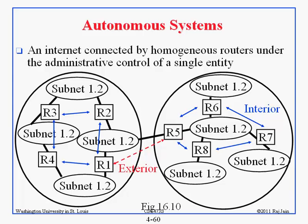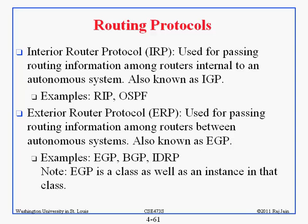Everyone should be clear about what is interior, what is exterior, what is AS. Both the protocol and the routers themselves are classified as interior or exterior. R5 is an exterior router and it speaks an exterior routing protocol. It also speaks with the interior — all exterior routers speak to the interior as well. So we have interior routing protocol and exterior routing protocol.